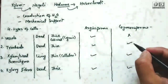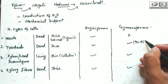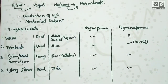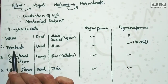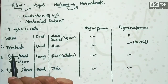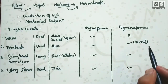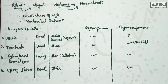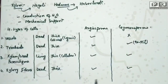Tracheids make up 90% of the wood in gymnosperms. That means the major part of wood in gymnosperms is formed by tracheids.